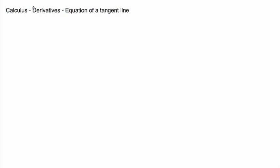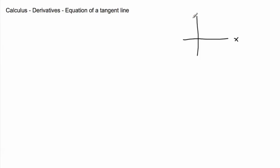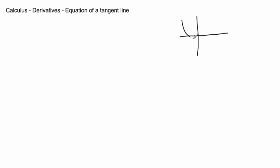So far we've been looking at calculus and derivatives, finding just the value of the slope of the tangent. But now we're actually interested in the equation of the tangent line. Here's some sort of graph — it could be X, it could be Y — and let's say I'm curious about the equation of the tangent line at a particular point.